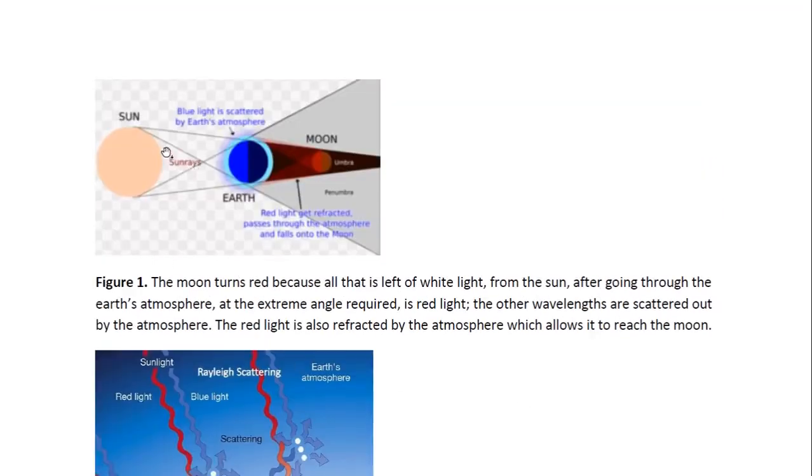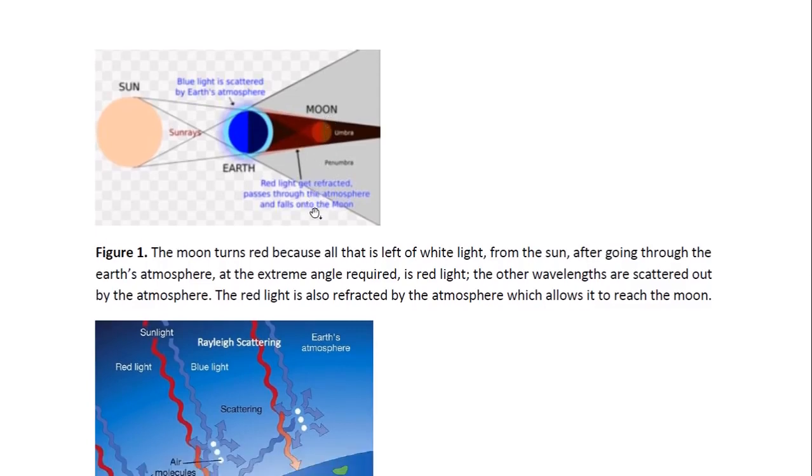And this is illustrated here. Light coming from the sun goes through the atmosphere, and so the blue light is scattered out of that sunlight by the atmosphere. And then what is left is the red light. And when sunlight goes through a long length of atmosphere, all the wavelengths are scattered out except for red. Then what's left is red, which is also refracted by the atmosphere so that it is able to reach the moon.